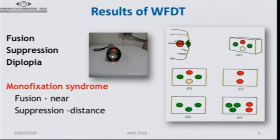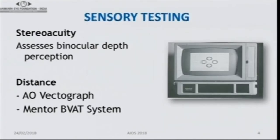The Worth four-dot test should be done for both distance and near after correcting refractive error. One important diagnosis you can make is monofixation syndrome, which we quite often miss. There might be slight disparity in vision in one eye with something abnormal but you can't find it. In monofixation syndrome, fusion is present for near but for distance the patient will be suppressing one eye. You have a very subtle squint — less than 3 prism diopters — that you can miss on alternate cover test, and the Worth four-dot test comes in handy here.